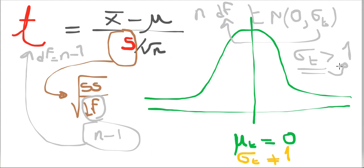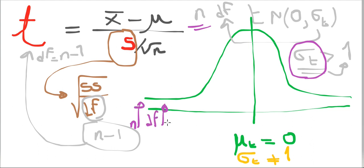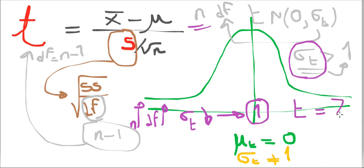If you compare T to Z, both are normal and both are centered at zero, but T is a bit flatter than Z. If you lay them on top of each other, T will always be a bit flatter. However, as n increases, the degrees of freedom increase, and therefore sigma of T gets smaller and smaller until it reaches a value of one — and when that happens, the T distribution and the Z distribution are exactly the same. Generally speaking, as your sample size increases, degrees of freedom get bigger, sigma of T gets smaller, and T starts to look more and more like Z.